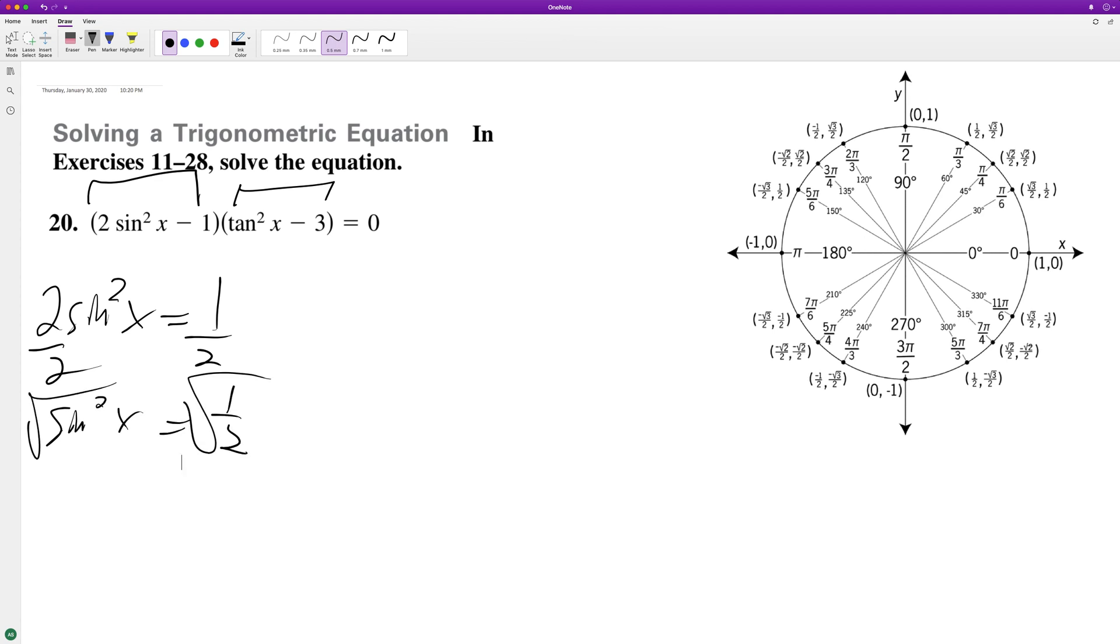Square root of both sides. We get sine of x is equal to plus or minus 1 over square root of 2, or sine of x is equal to plus or minus square root of 2 over 2, either way. And that's going to be true at pi over 4, 3 pi over 4, 5 pi over 4, 7 pi over 4.